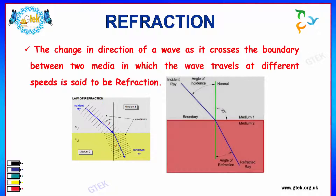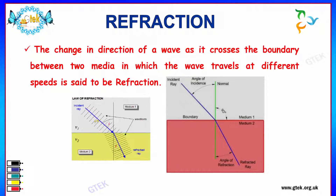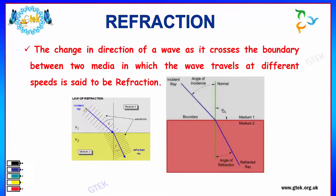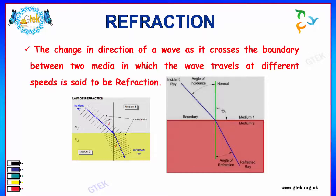This is considered to be medium 1 and medium 2, in which the wave is travelling at different speeds. In medium 1 you can see the different wave forms, whereas in medium 2 you can see how the wave is getting to be refracted.